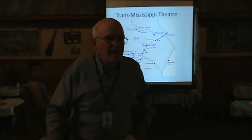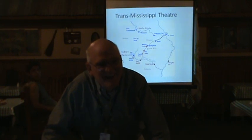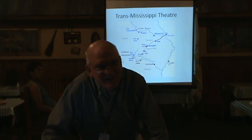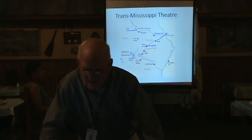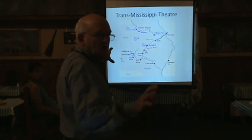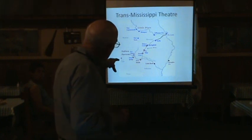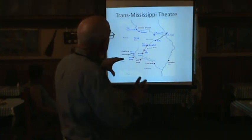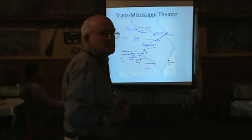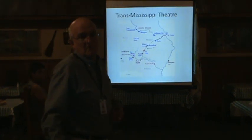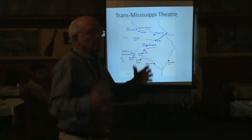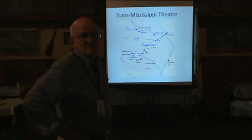An audience member from a different camp challenges a few points. First, he notes that Texas was also part of the Trans-Mississippi Theater, under General Richard Taylor as head of the Trans-Mississippi Department, and that battles in and near Texas were all in that department. The speaker acknowledges the point, clarifying that Texas was a total entity unto itself and not shown in the gray area on the map — but the audience member insists it was under the Trans-Mississippi Department.